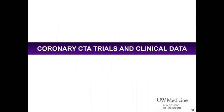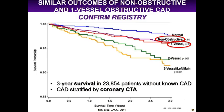The CONFIRM registry is a three-year survival study in more than 23,000 patients without known CAD, stratified by coronary CTA. As expected, more vessels involved meant worse outcomes — lower survival with three-vessel then two-vessel disease. Interestingly, they found that outcomes of non-obstructive CAD were equal to those with one-vessel obstructive CAD. This shows that even patients with non-obstructive CAD defined as stenosis less than 50% still have a worse prognosis compared to patients with normal coronary arteries.